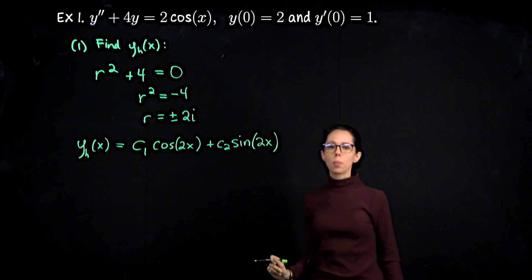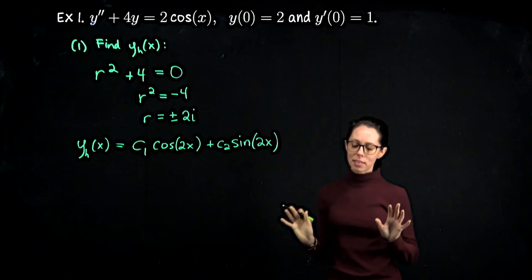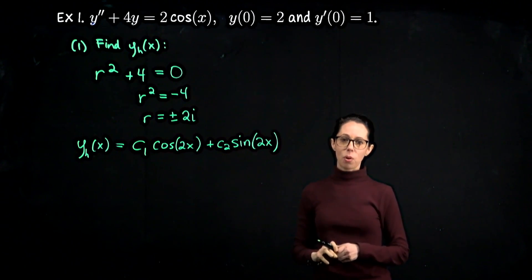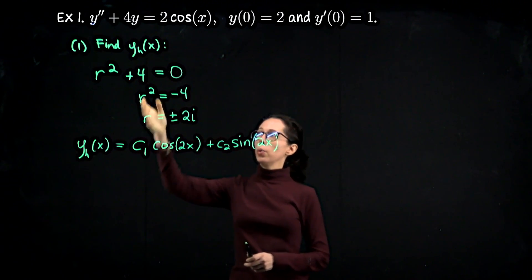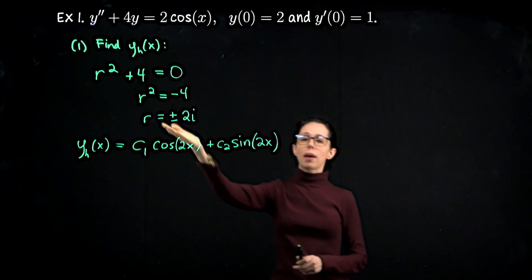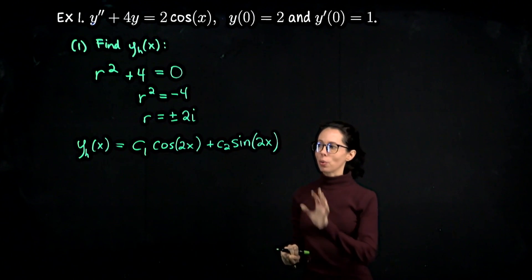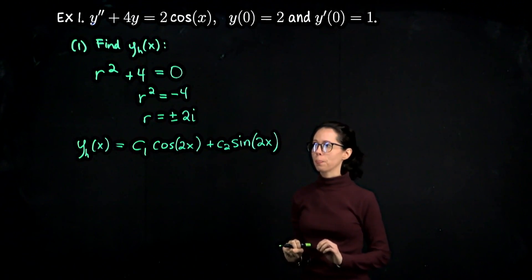In the next example we have the same left-hand side, which means we will have the same homogeneous solution. So this is the only homogeneous solution that we're going to find in this video.